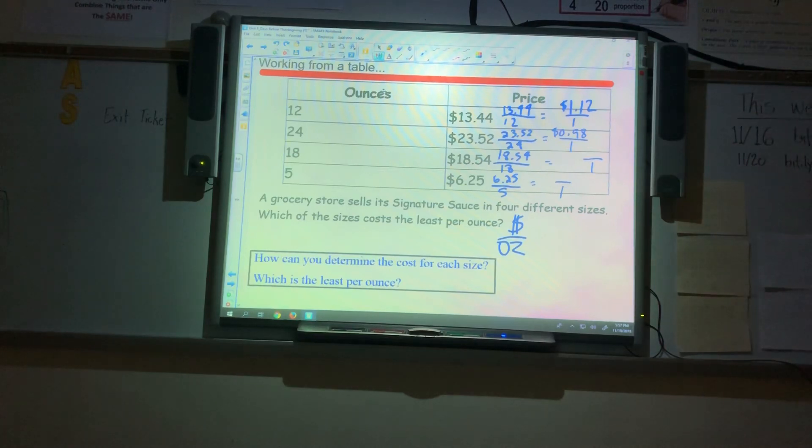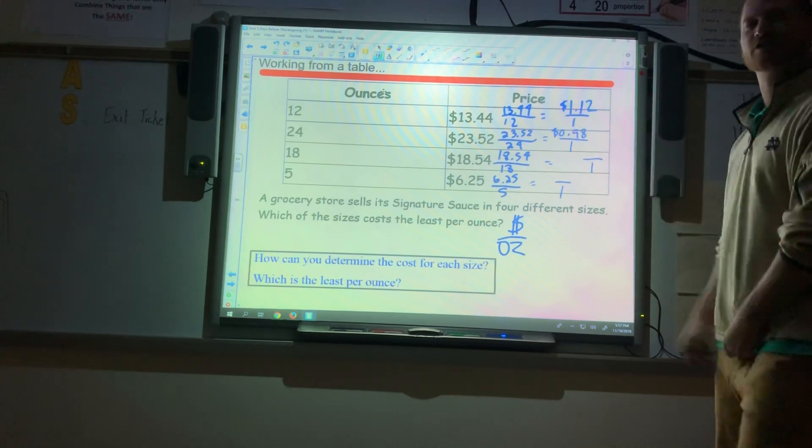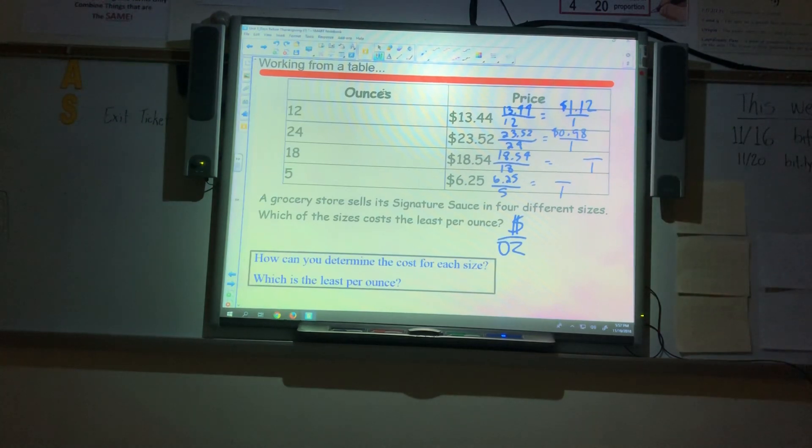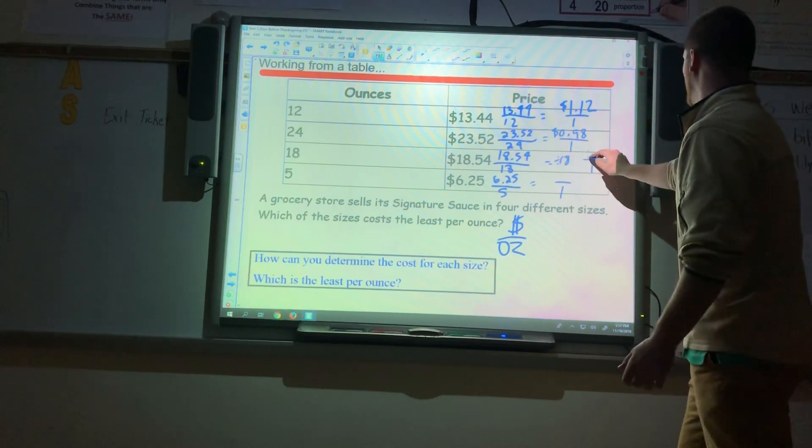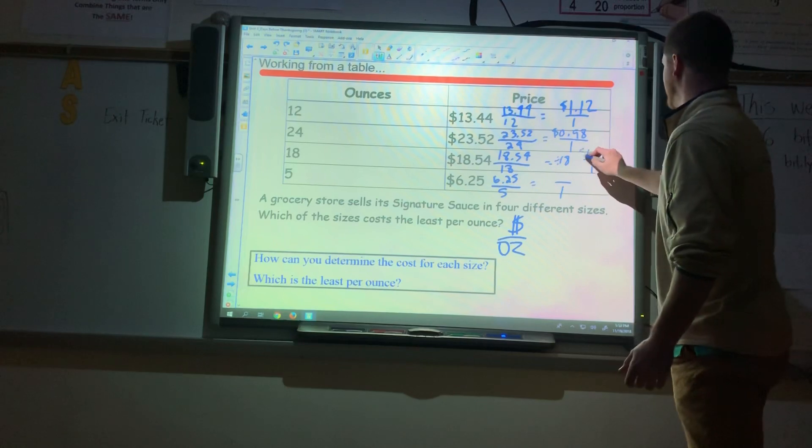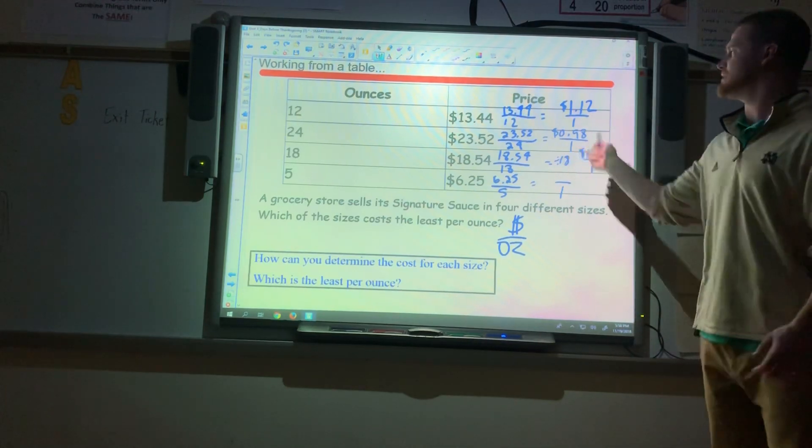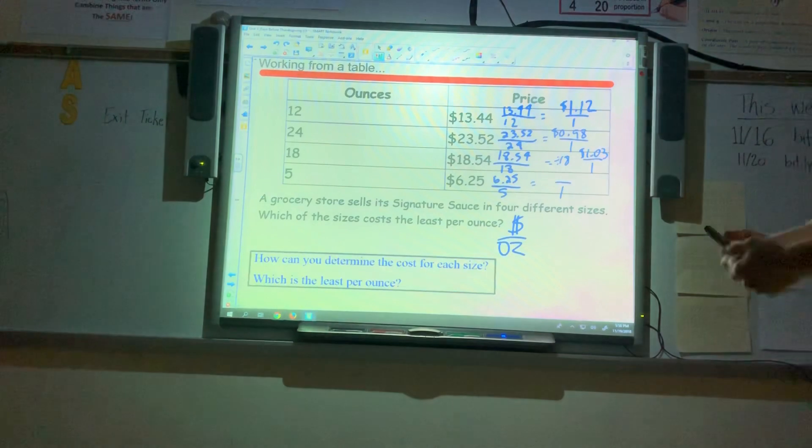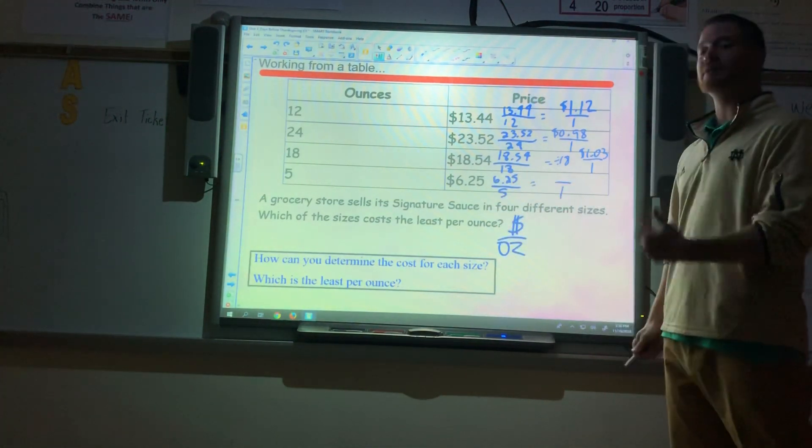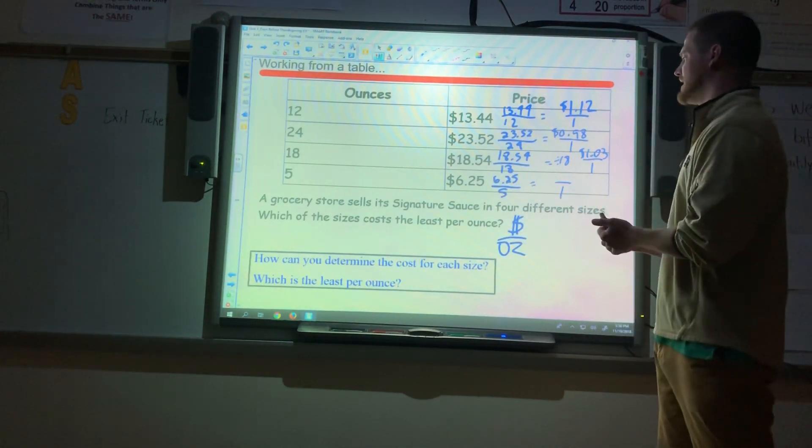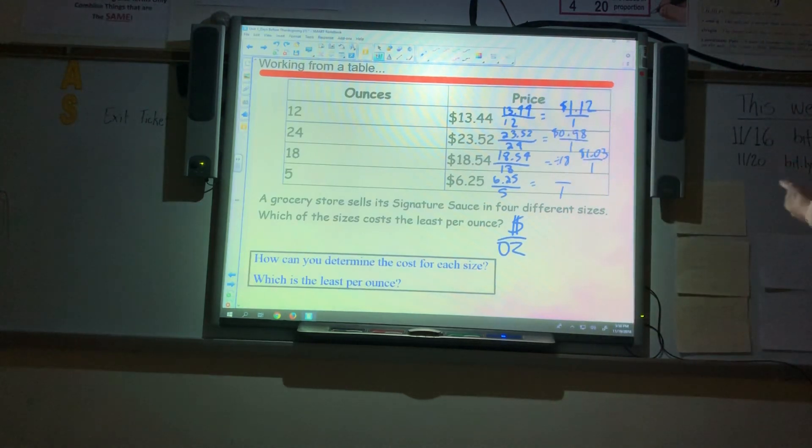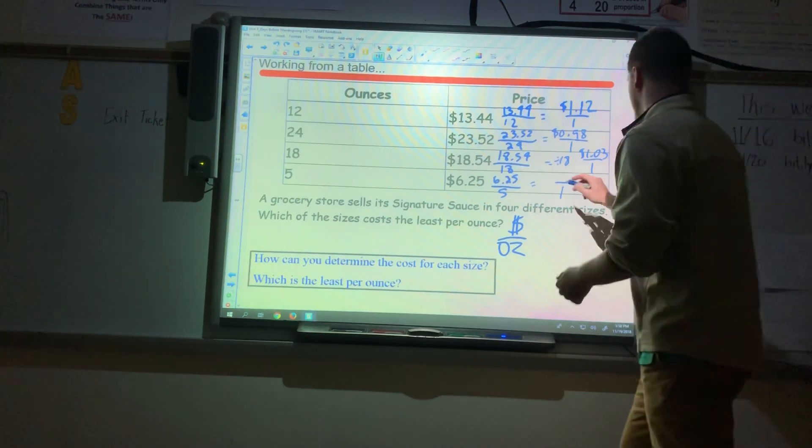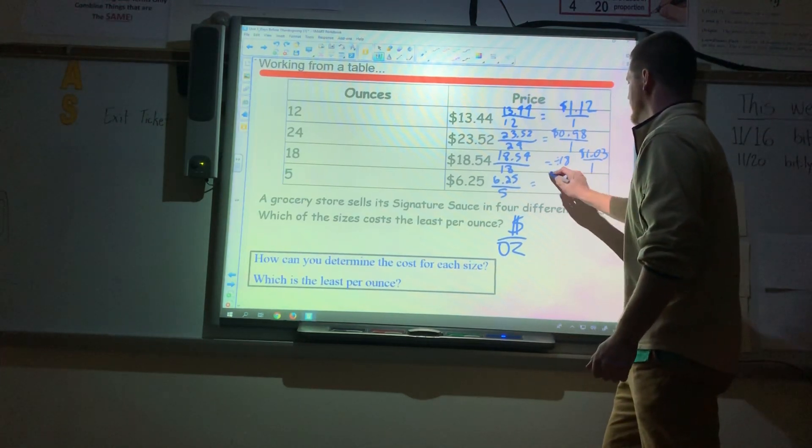The next one, I know 18.54 is a little greater than 18. So when I divide that out, I know my answer is probably going to be a little greater than 1. So when you type in 18.54 divided both across by 18, we get $1.03. So still cheaper than the first one, but not cheaper than 98 cents per ounce. Last but not least, this one is probably going to be the greatest amount because 6.25 and 5, I mean, that one-on-one ratio is not quite there. So if you type in 6.25 divided by 5, we get $1.25 per ounce.